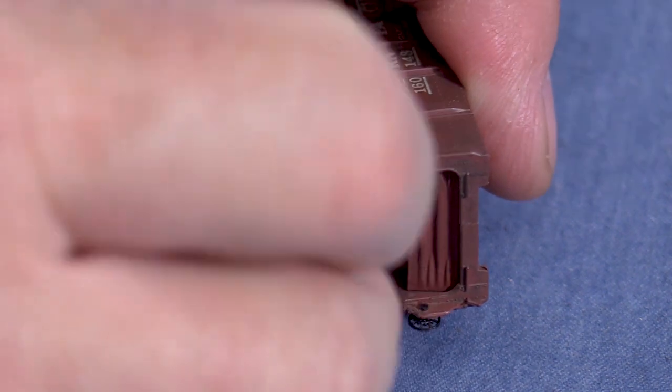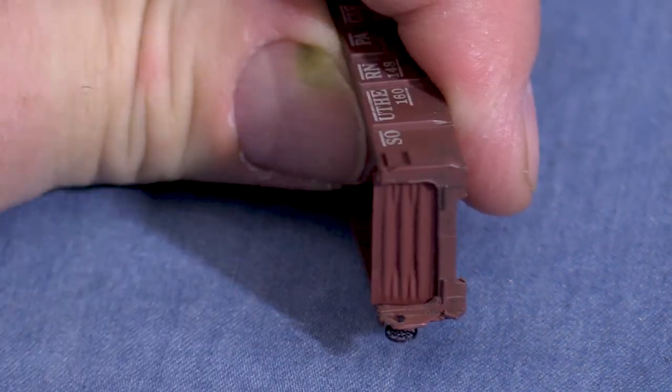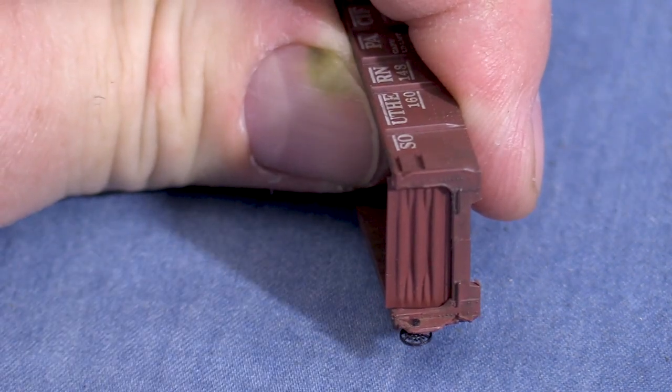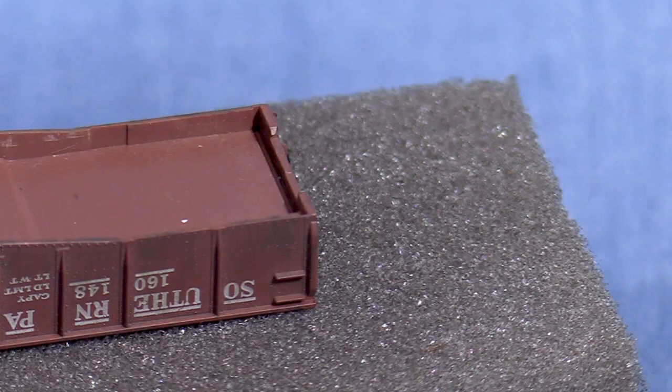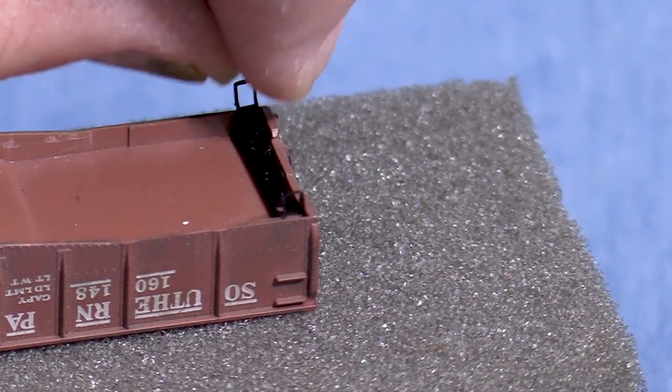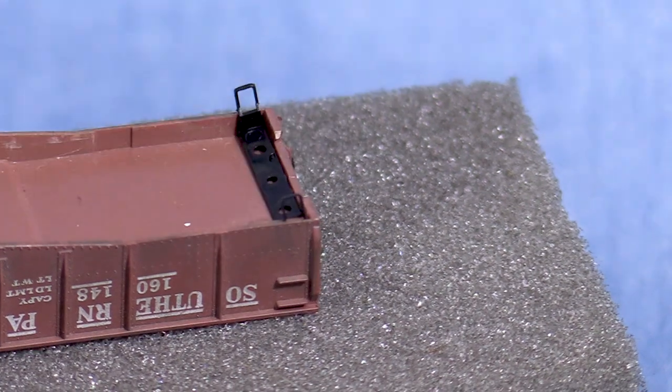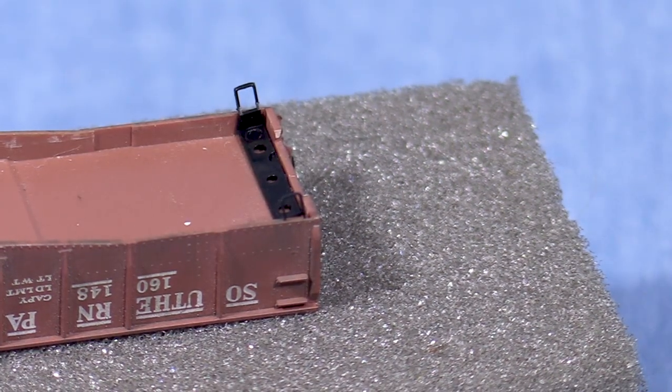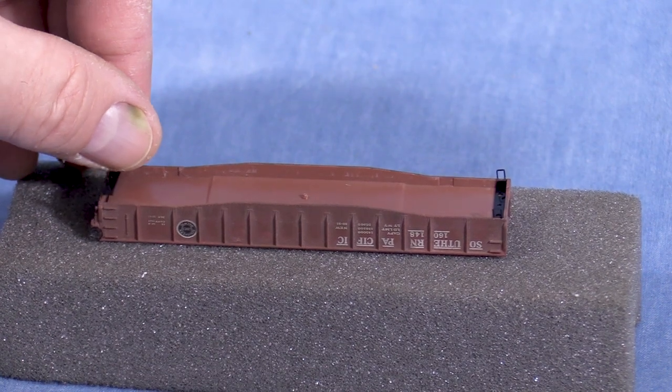Before putting the car together, make sure that the drop ends are pulled up. Sometimes they tend to sink down into the car body. For this next part I've turned the car upside down and put it on a piece of foam to protect it. I'll place a step assembly on the end of the car, making sure that the ridge fits into the slot. I'll do the same thing on the other end.